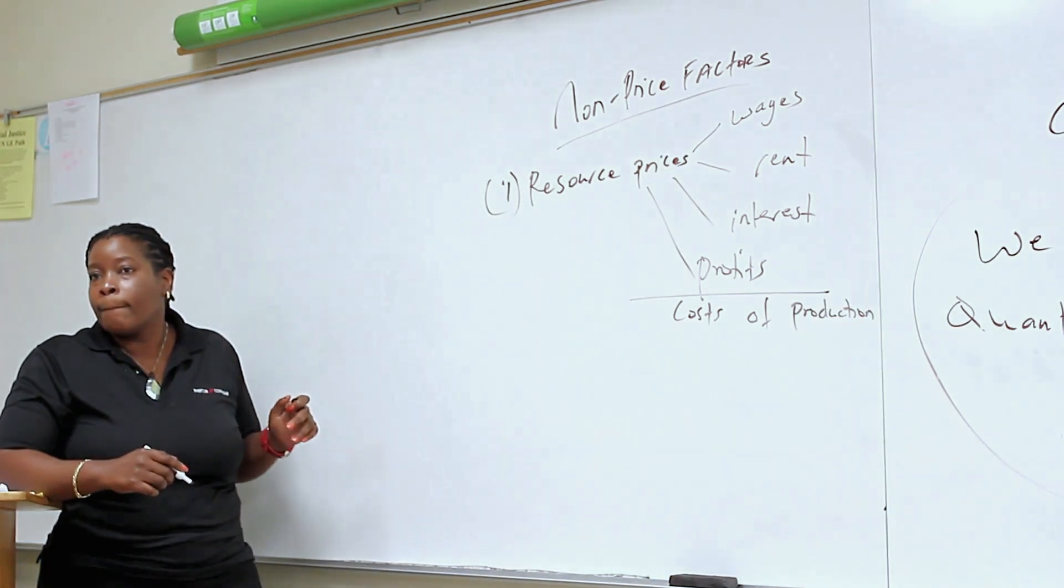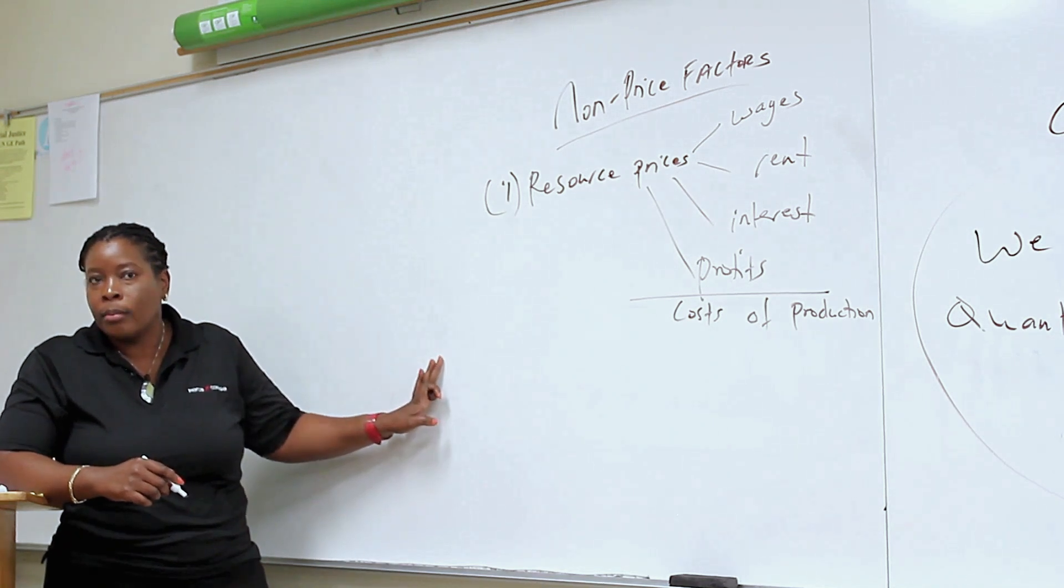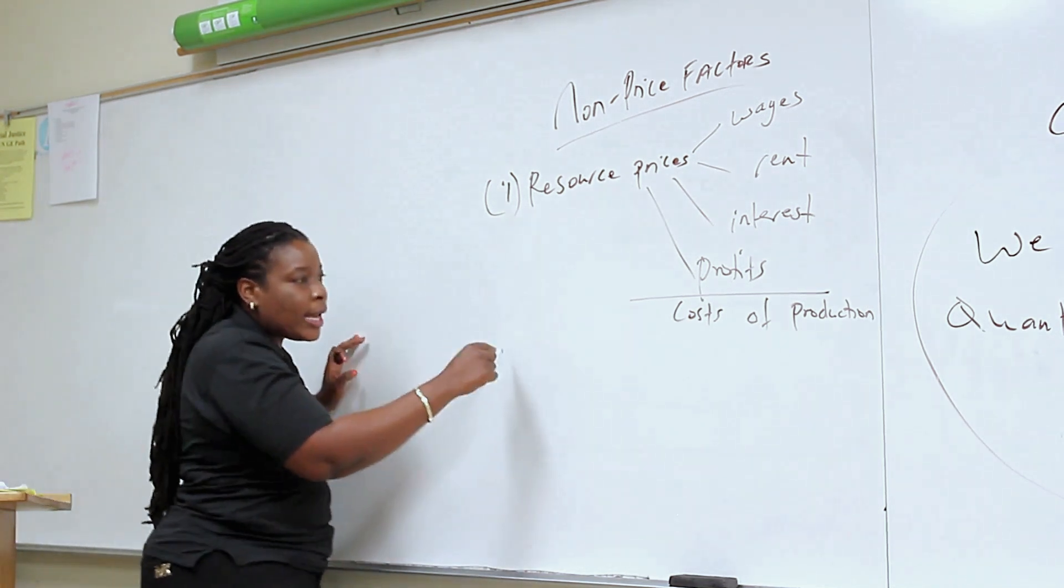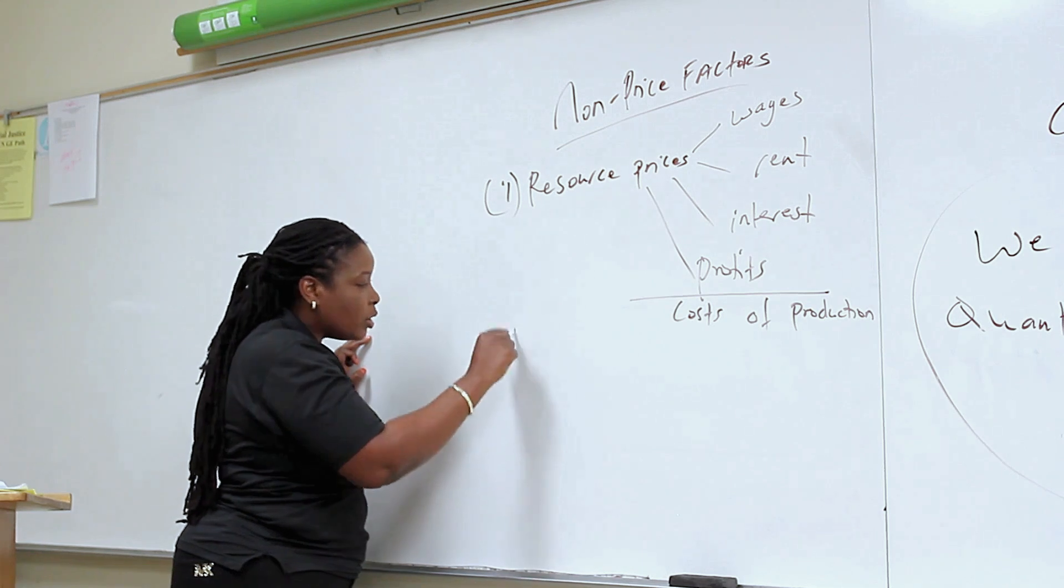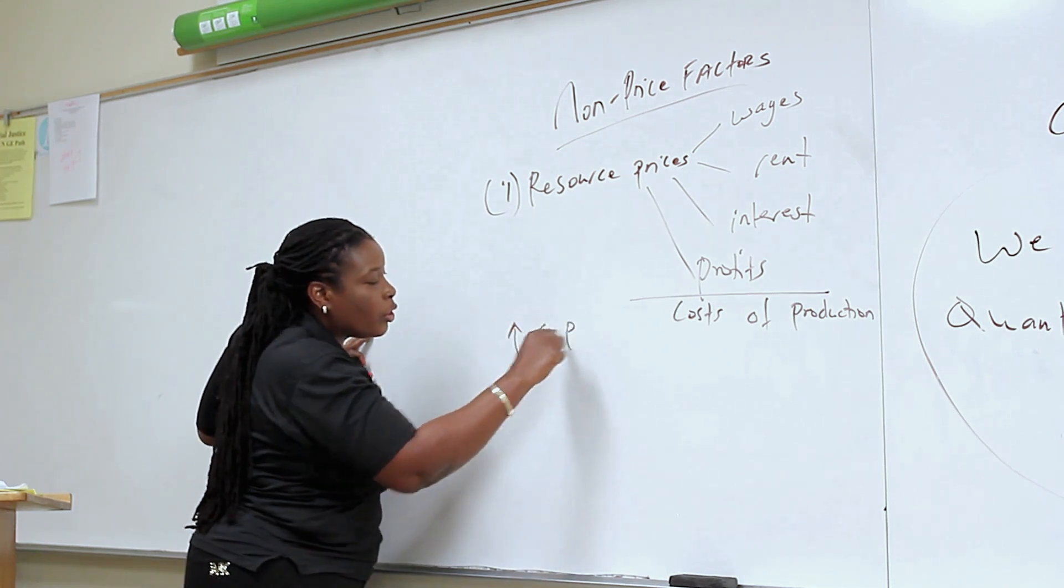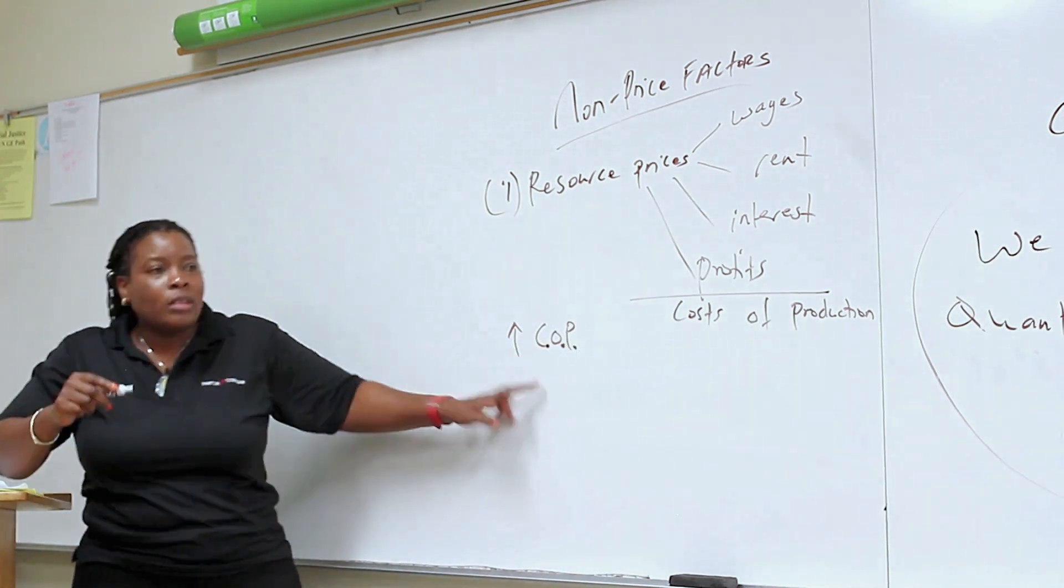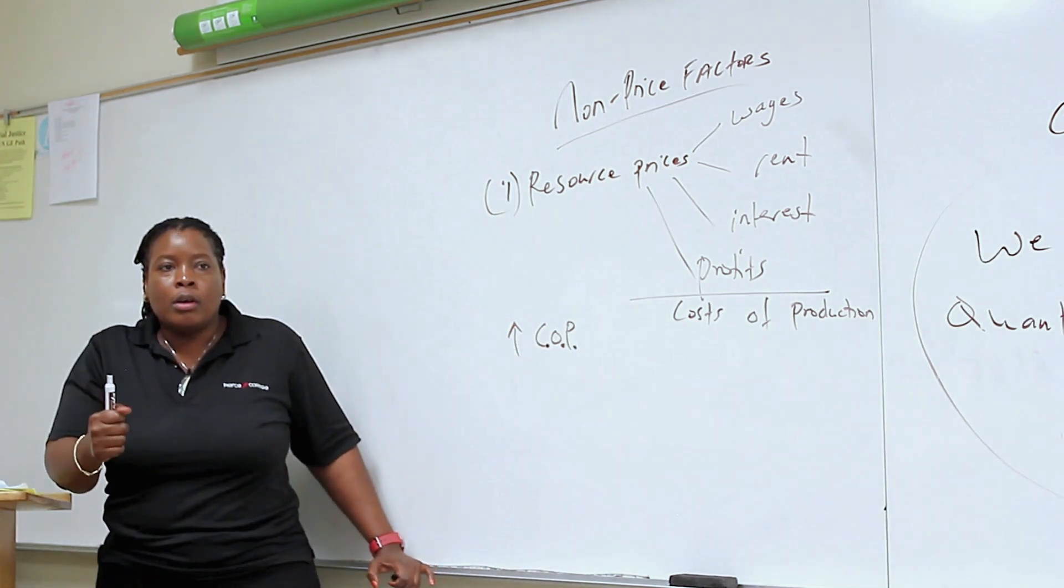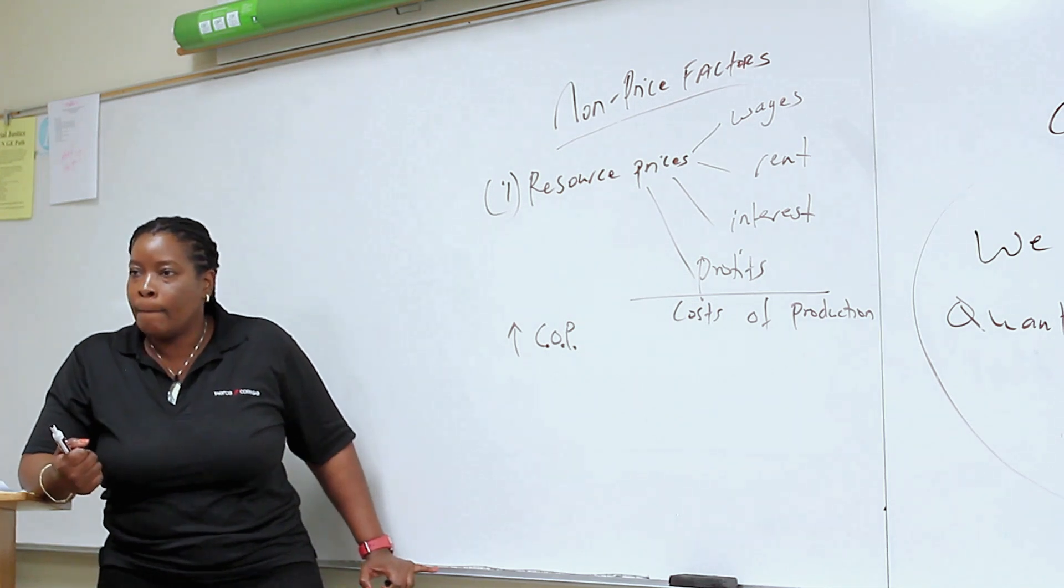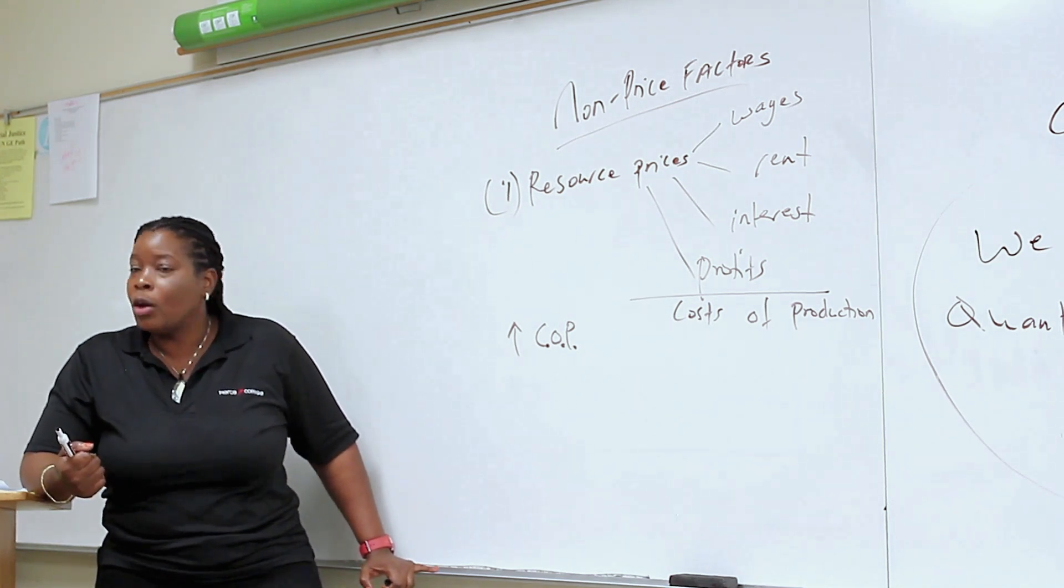Now how does this work? For example, I've got to pay more wages. Let's say the cost of production. Let me do this. The cost of production goes up. What should happen to supply? It goes down.